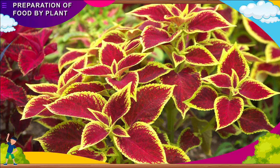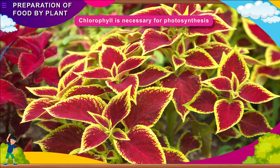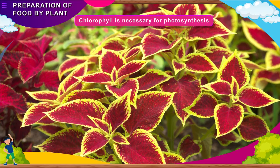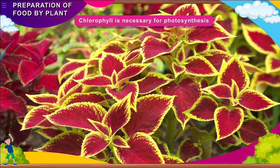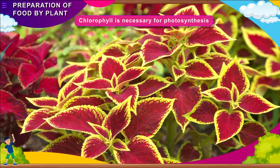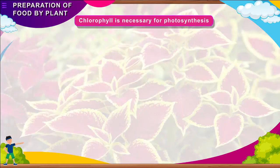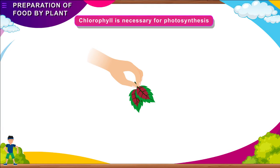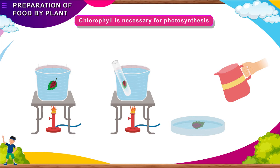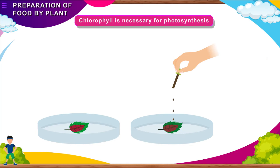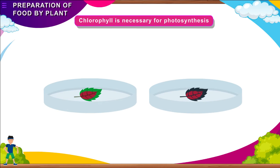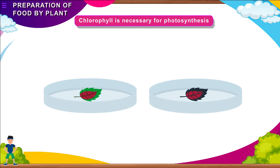Activity: Chlorophyll is necessary for photosynthesis. Leaves of plants like croton and coleus are not fully green; some parts of these leaves are of different colors. Take two similar coleus leaves. Take one of them and test it for the presence of starch as learned in the previous activities. Now compare its color with the other leaf. What do you find? The green part turns blue-black and the non-green part does not change. This shows that chlorophyll is necessary for photosynthesis.